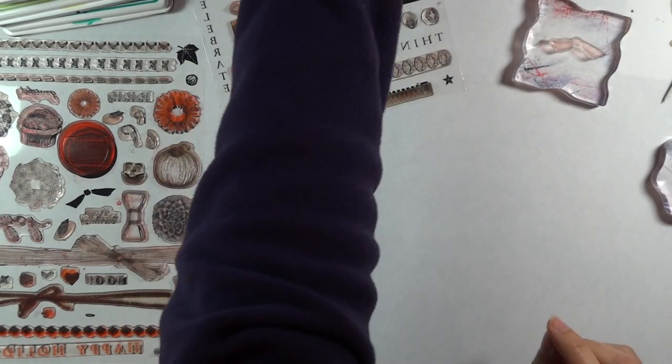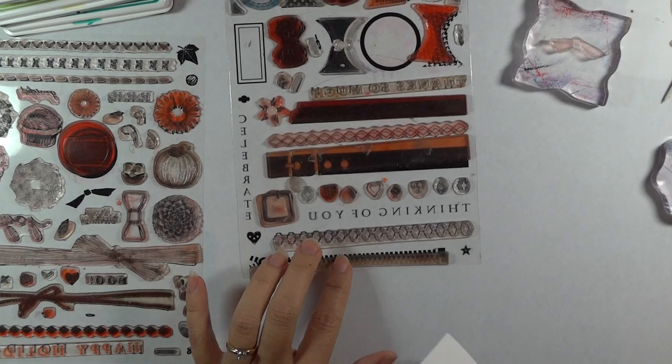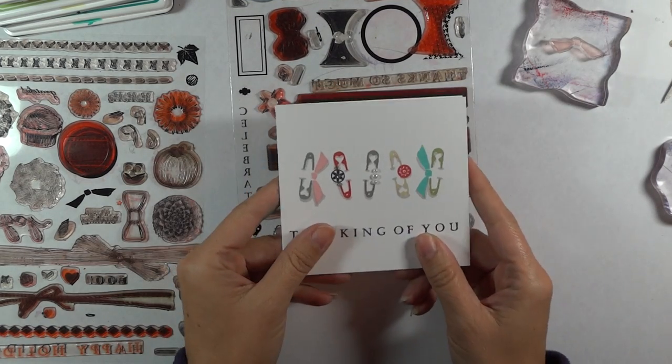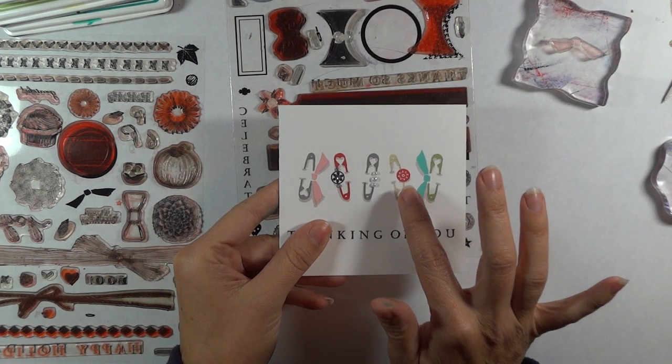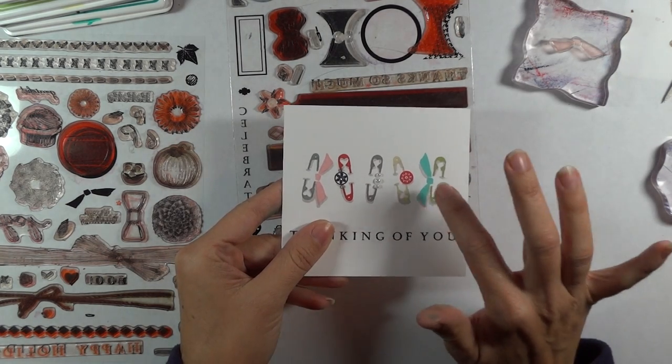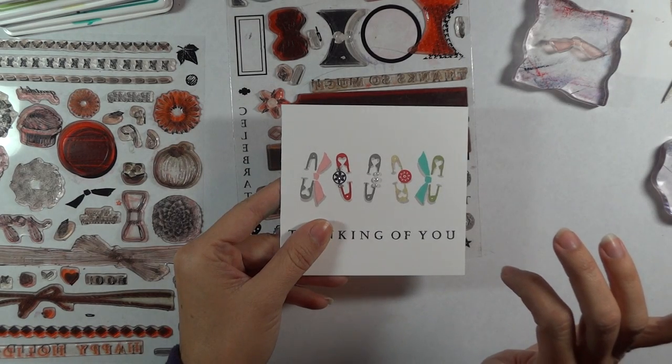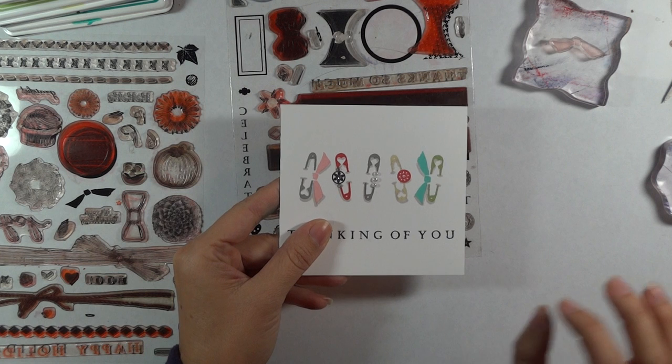I'm also going to be using accents from the Triple Play Fillers Set and a greeting. On this particular card, I used an accent from Triple Play Frame and Fabulous Frame Fillers, this one and this one, so those will both fit onto the safety pin. There's a lot of different options.